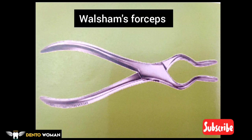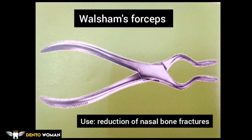Walsham's forcep — this is also a paired instrument used for the reduction of nasal bone fractures. As you can see, both beaks are curved. One curved blade is placed on the outer aspect of the nose externally on the nasal bone, while the other blade grasps the nasal bone from inside the nose.